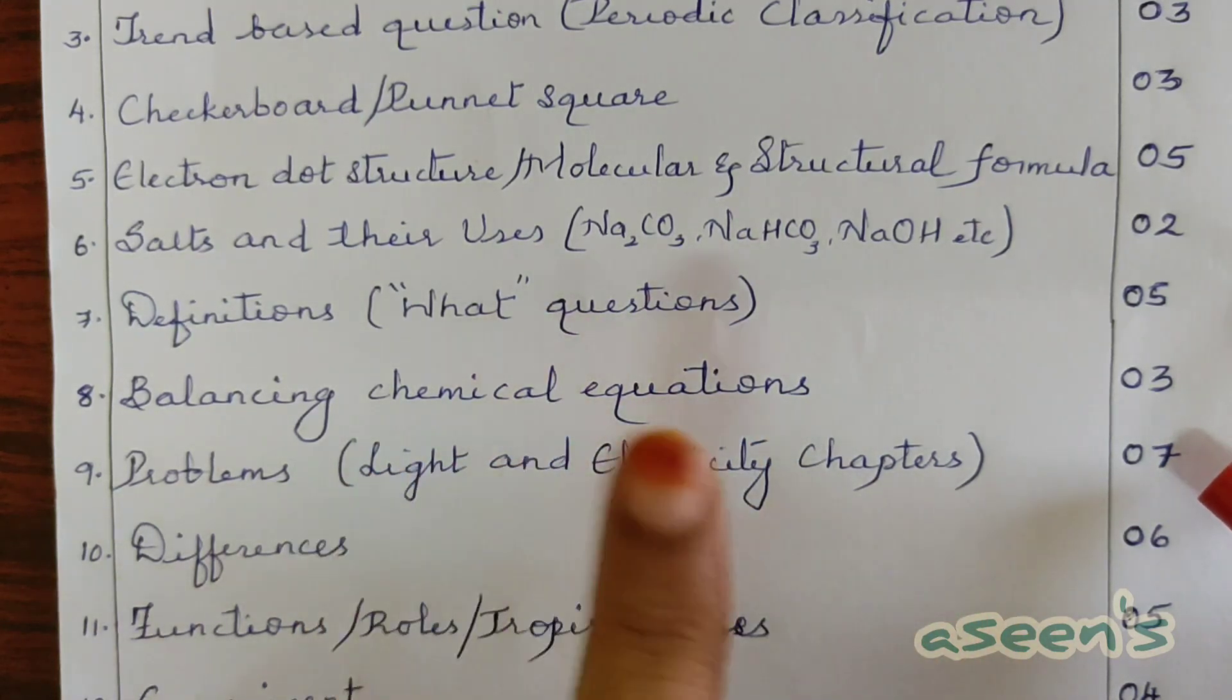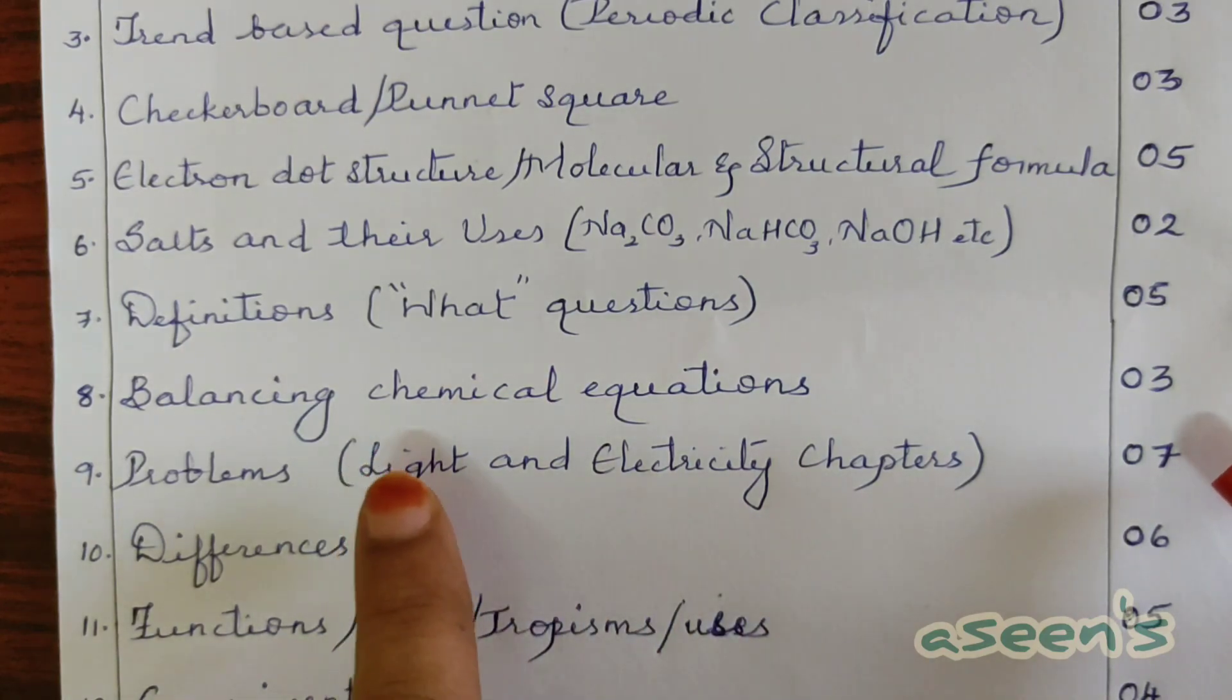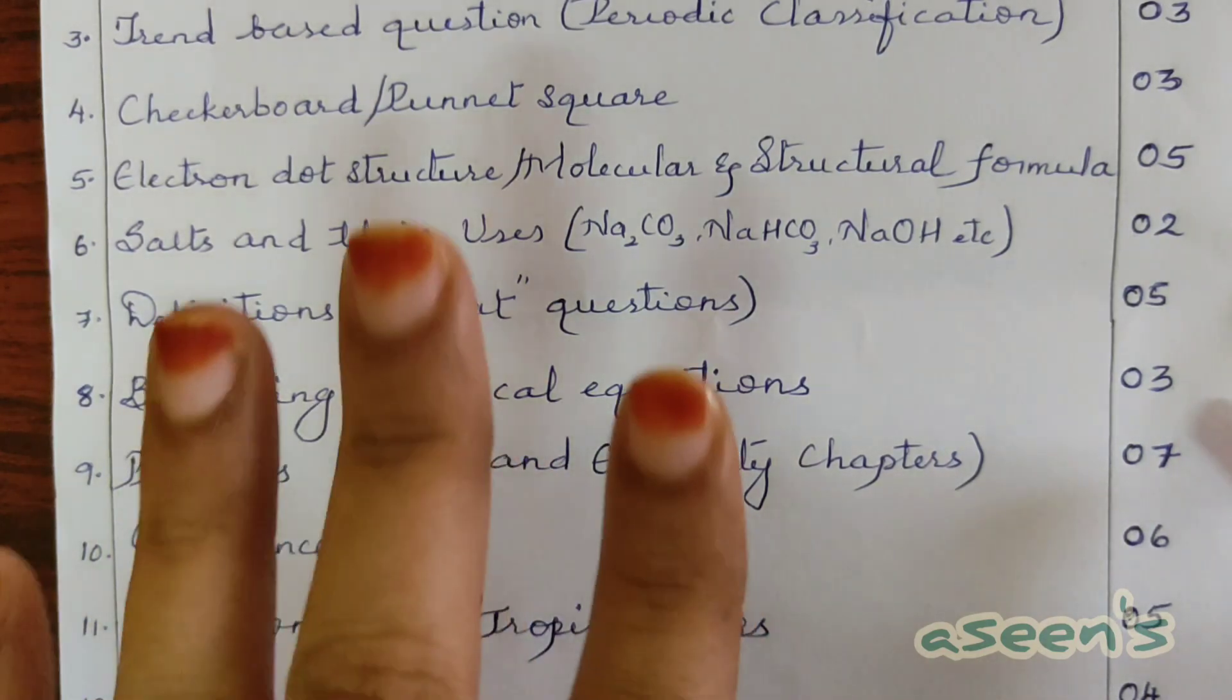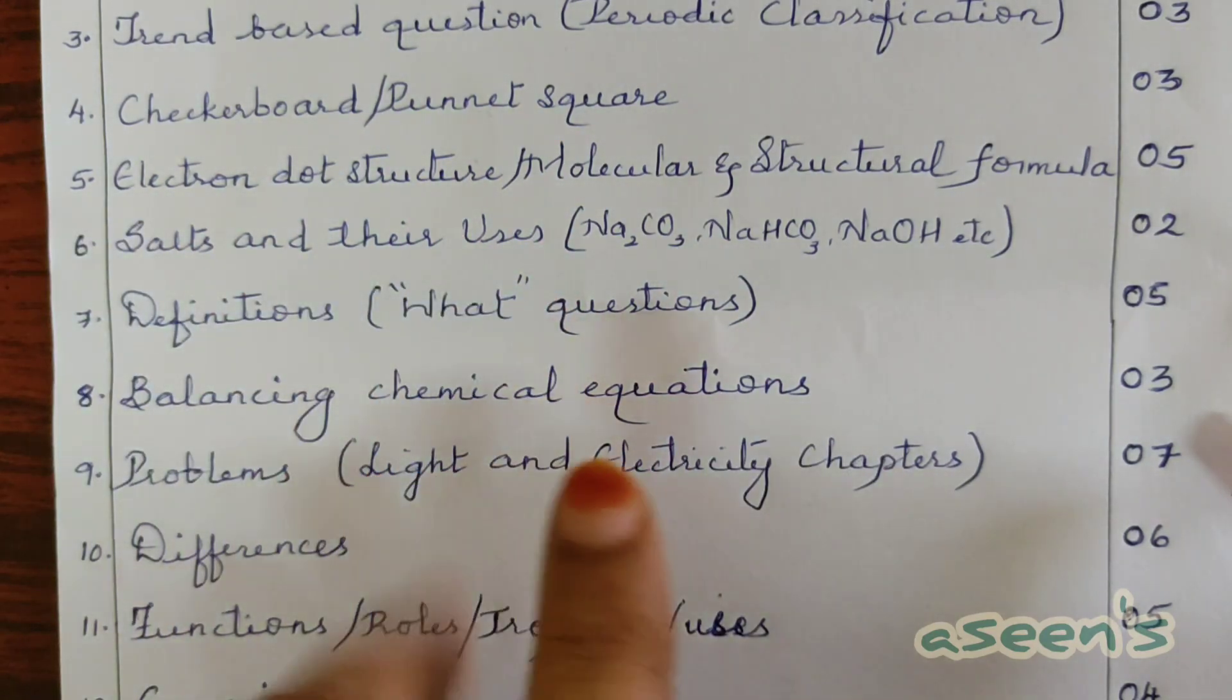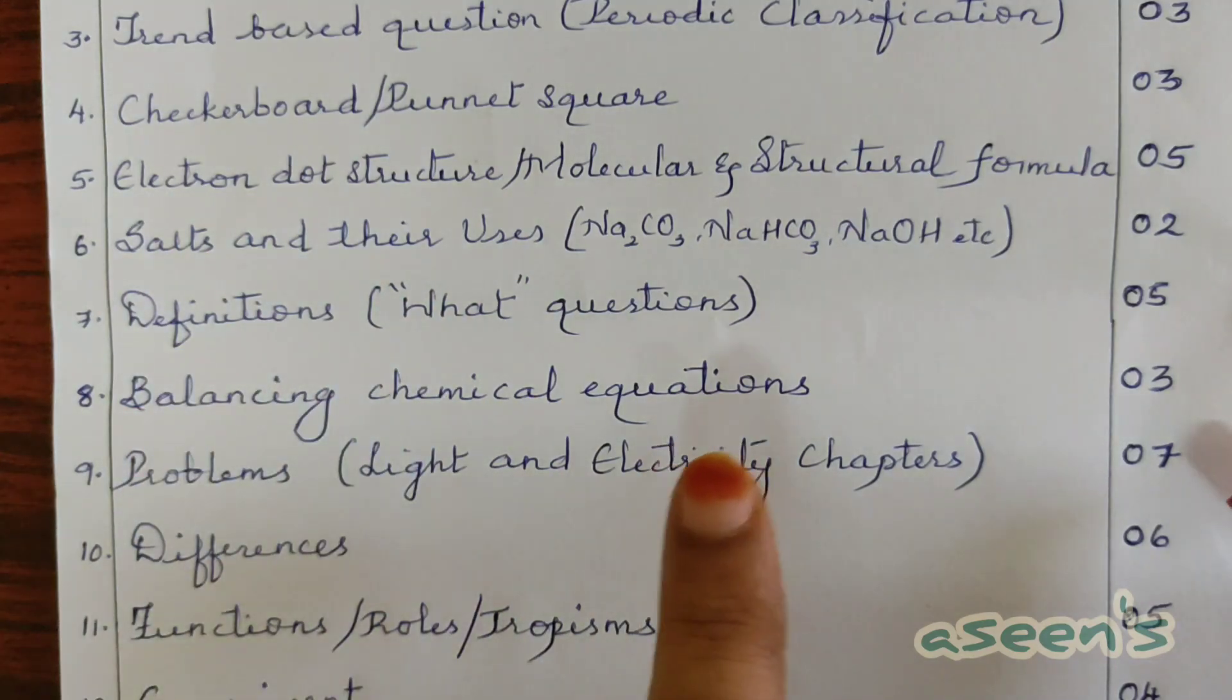Since it's an odd number, they cannot divide it equally. For solving light problems we have only a selected few formulas, which is very easy and could be easily mastered. For electricity it could be a little tricky, but I'll be solving them soon.